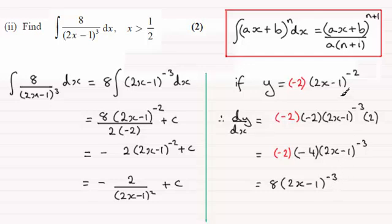So that I know that if I differentiate this I get this answer. So obviously if I integrate this it must have come from minus 2 times 2x minus 1 to the power minus 2, which is really what we've got here.